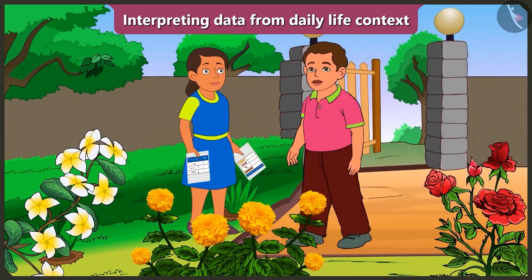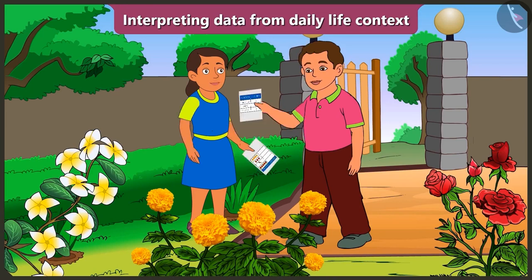Hey Bubbly, what are you doing in the garden? Bunty, Mummy has prepared this table and given it to me. There are different flowers in the garden. I am counting the blossomed flowers to find out how many flowers have blossomed.